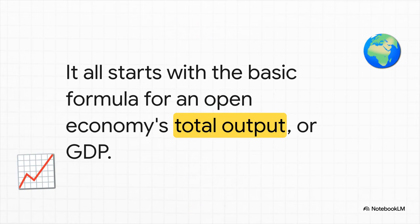The starting point — the place where we begin to unravel this whole thing — is a country's total economic output, what we call GDP. And a huge part of that calculation is figuring out what a country sells to the world, its exports, and what it buys from the world, its imports. That relationship is really our gateway to understanding this global flow of money.